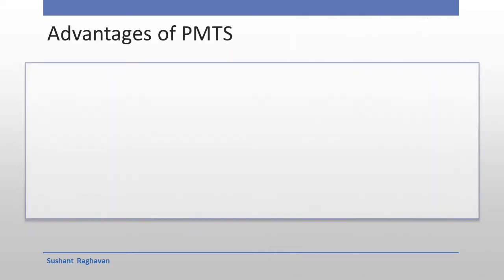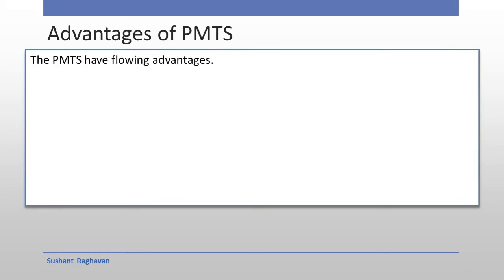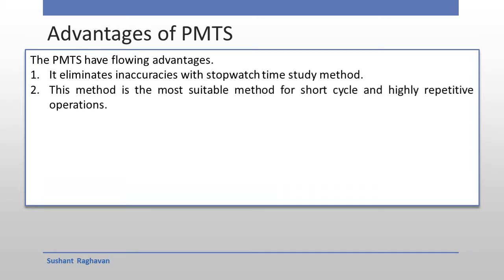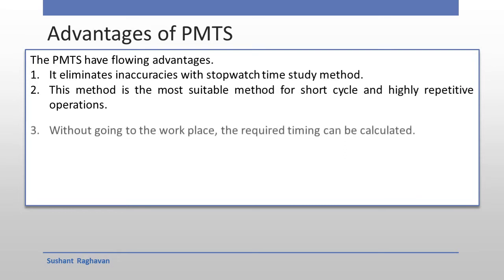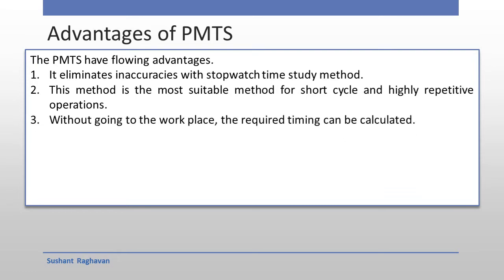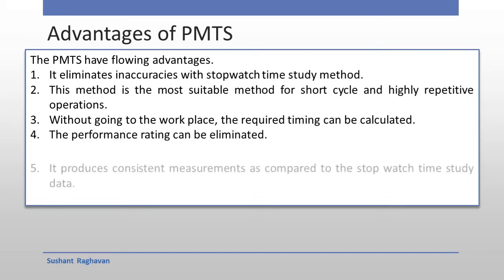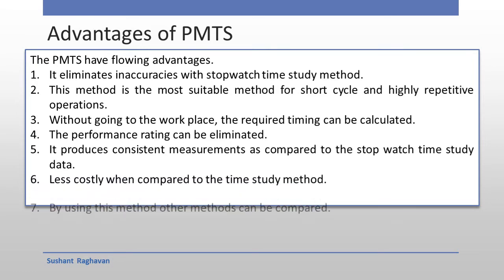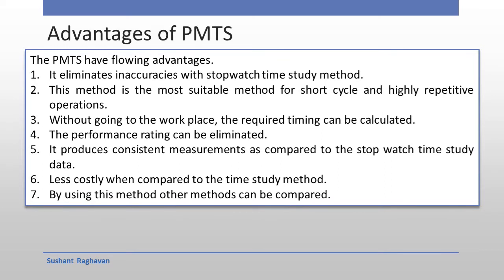Advantages of PMTS: It eliminates inaccuracies with the stopwatch time study method. This method is most suitable for short cycle and highly repetitive operations. Without going to the workplace, the required timing can be calculated. The performance rating can be eliminated. It produces consistent measurements compared to stopwatch time study data. It is less costly when compared to the time study method. By using this method, other methods can be compared.